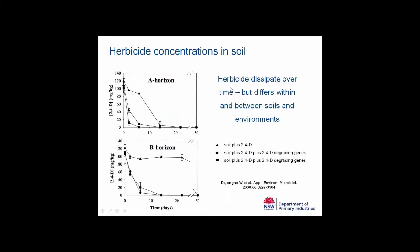Herbicides also dissipate over time — once applied, they start moving about and breaking down. Importantly, this differs from farm to farm, between soils and also different environments. This graph shows the breakdown of 2,4-D, where most of the herbicide has disappeared from the A horizon by two weeks after application. However, if the herbicide moves to the B horizon, it takes almost 50 days to dissipate. So even within the same soil, you can get different rates of dissipation.